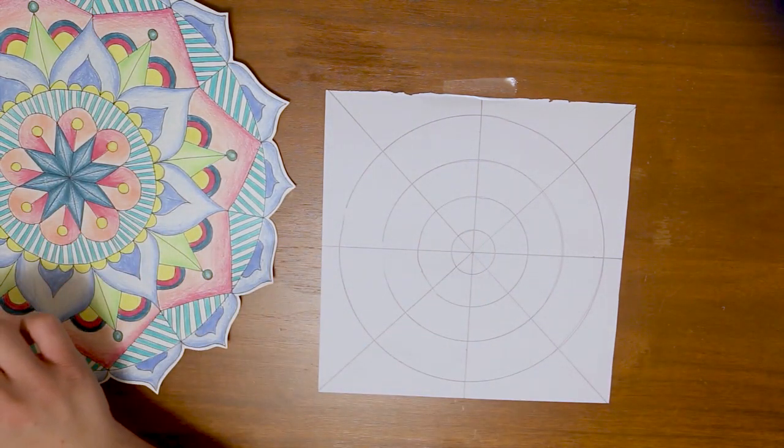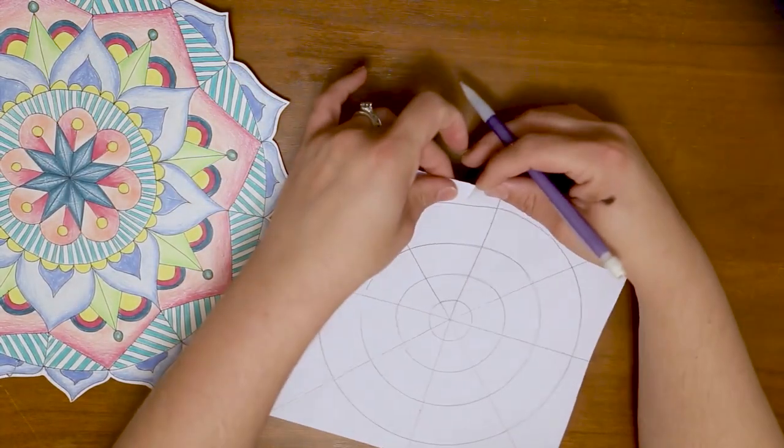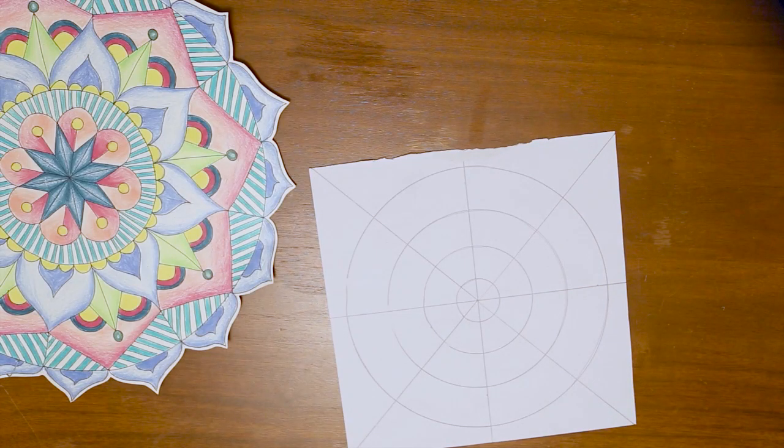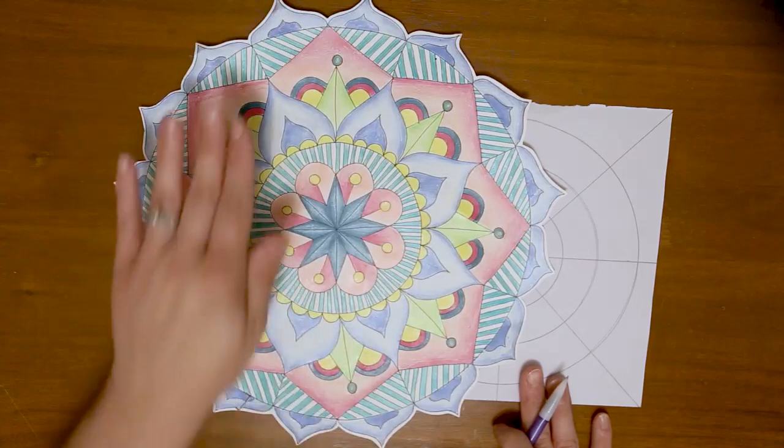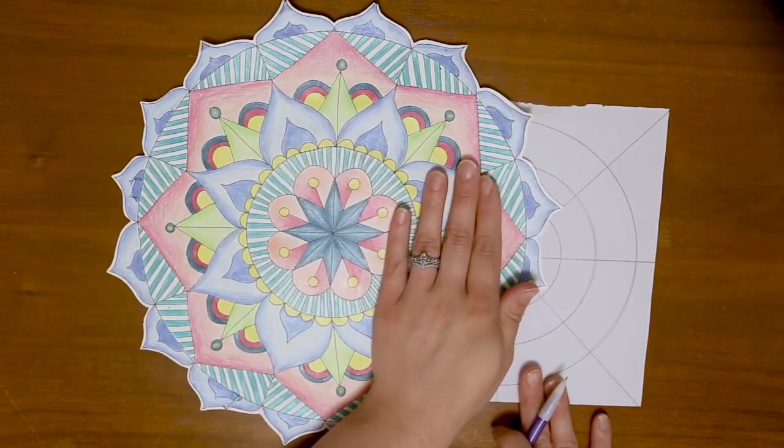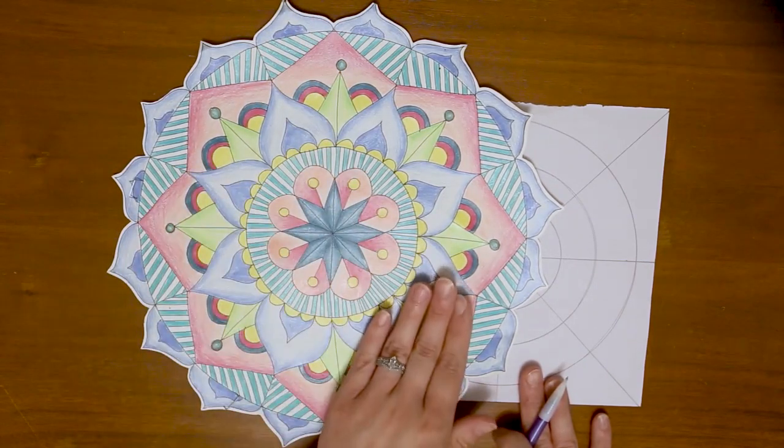Now I'm ready to get started drawing my mandala. I'm going to take off that tape. Now it's really important when we're making our mandala that our mandalas are symmetrical. We want what happens on one side of our mandala to happen on the other side of our mandala as well. So if we were to divide it in half, it's the same on both sides.